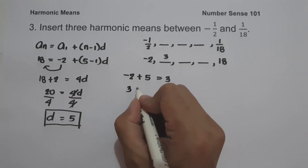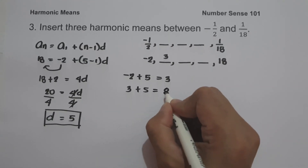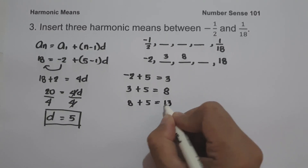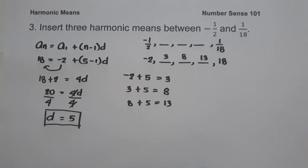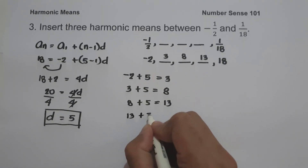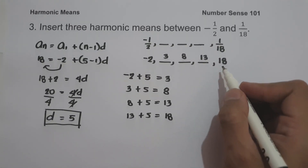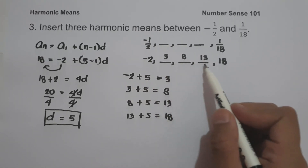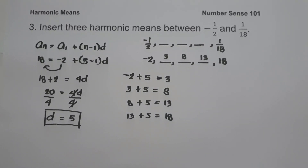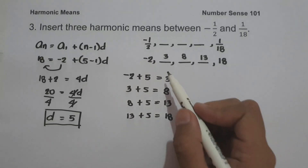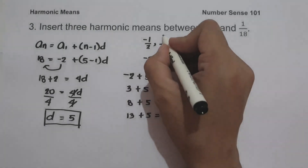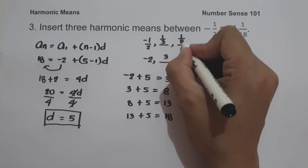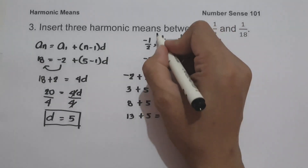Then 3 plus 5 is 8, and 8 plus 5 is 13. To check: 13 plus 5 is 18, which is our last term. So the arithmetic means between negative 2 and 18 are 3, 8, and 13. To find the three harmonic means between negative one half and one over 18, we take their reciprocals: the reciprocal of 3 is one third, the reciprocal of 8 is one over 8, and the reciprocal of 13 is one over 13. This is our answer.